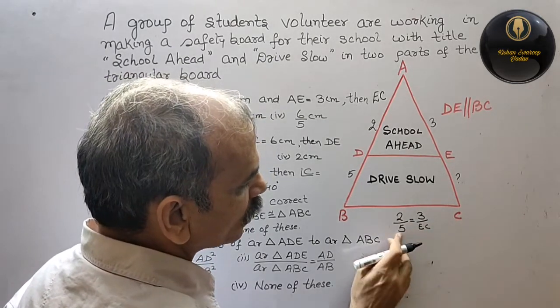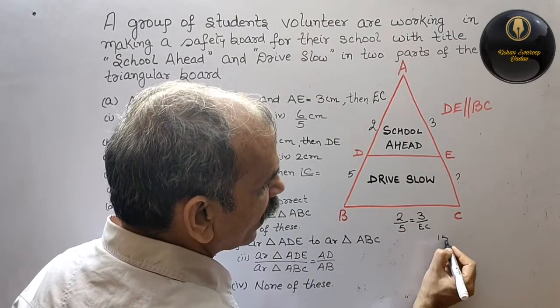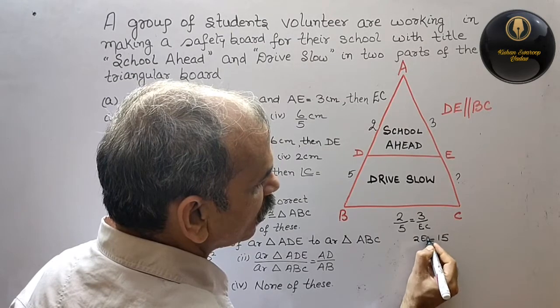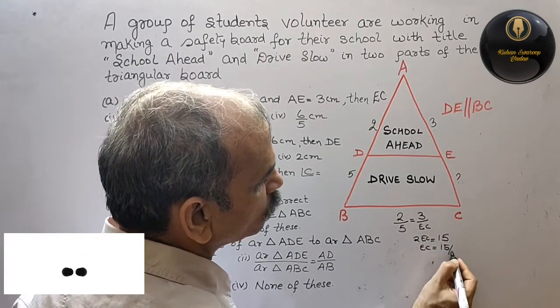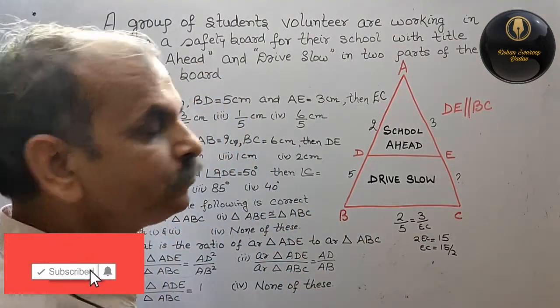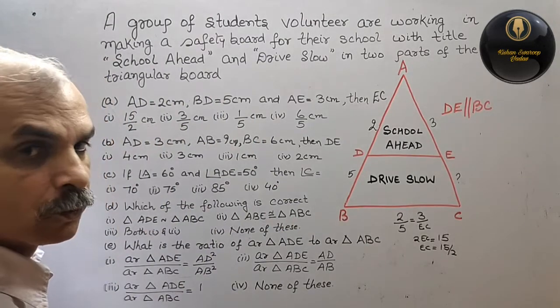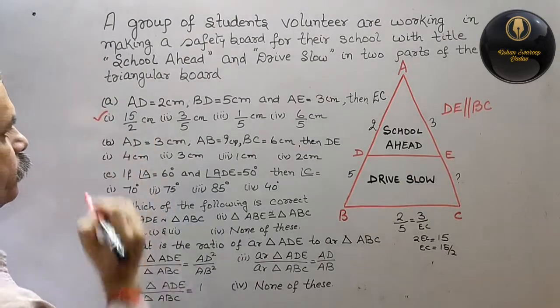Cross multiply, 5 into 3 is 15. So 15 equals 2 EC. EC is 15 by 2. So first option is 15 by 2, so that way this is your correct answer.